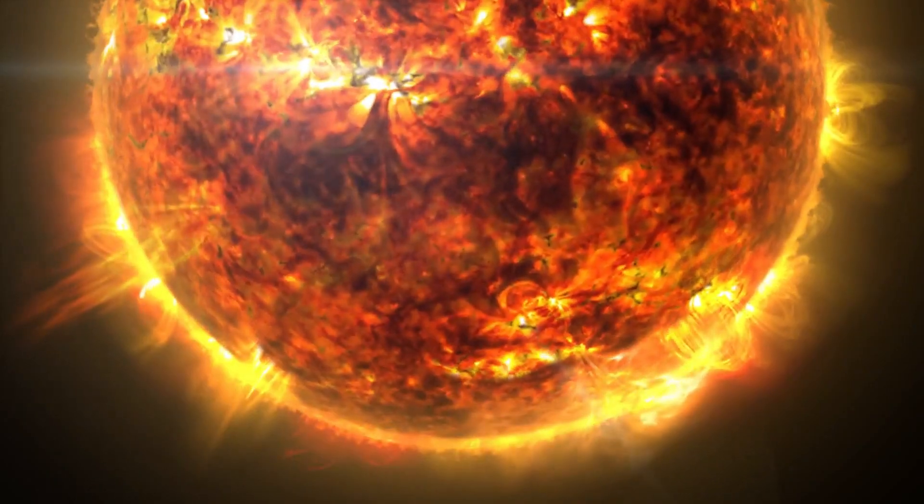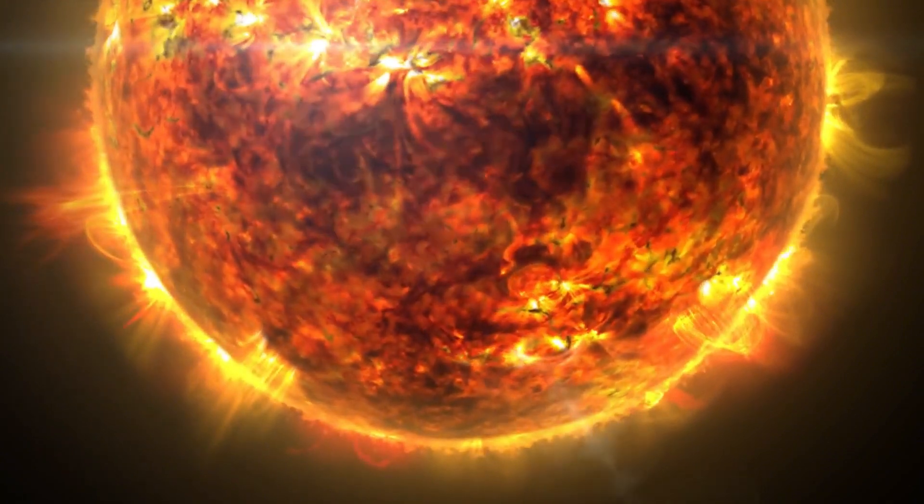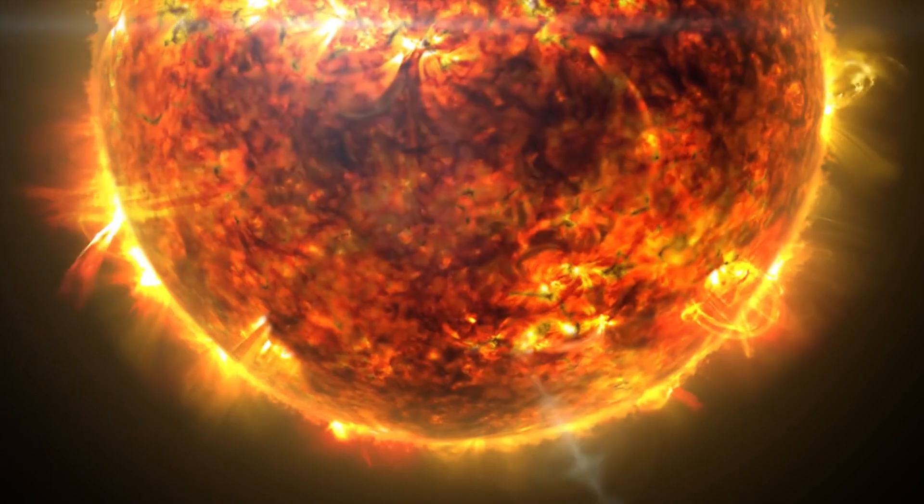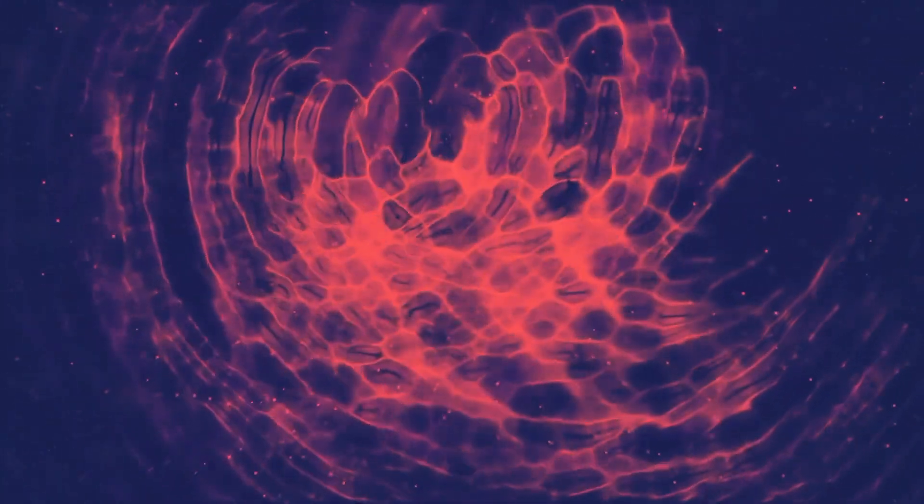This principle helps explain why structures like solar prominences, coronal loops, and large-scale cosmic plasma filaments maintain their shape. They are shaped by the movement of plasma, which carries the magnetic field lines with it.